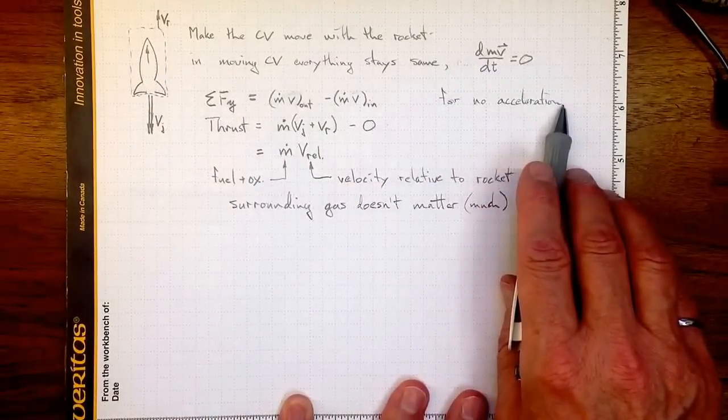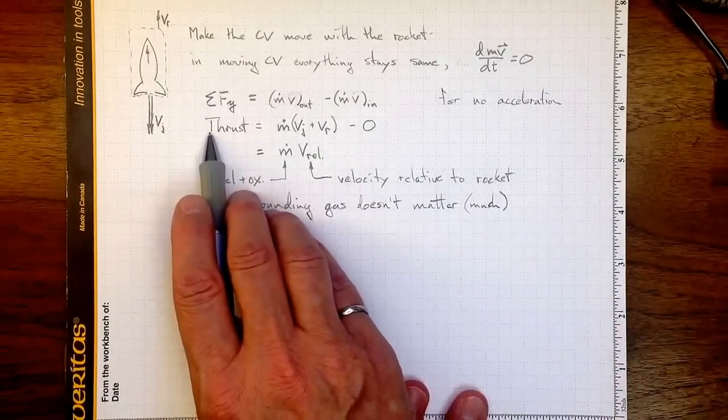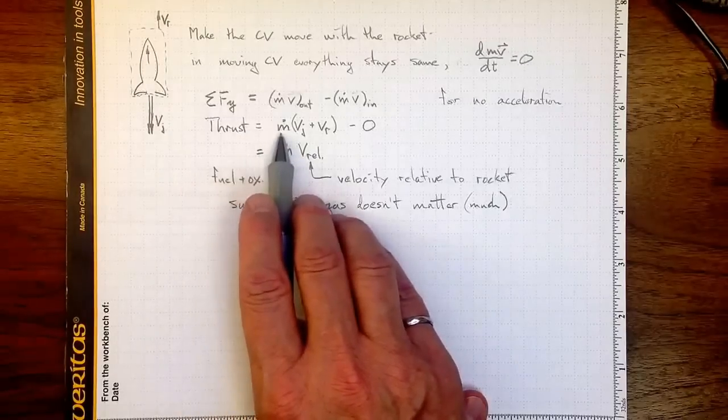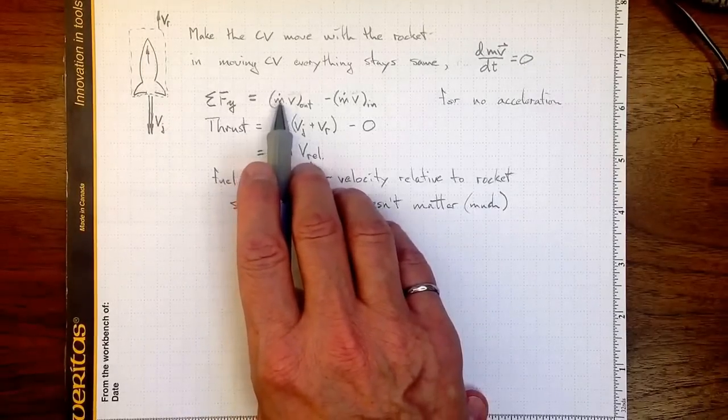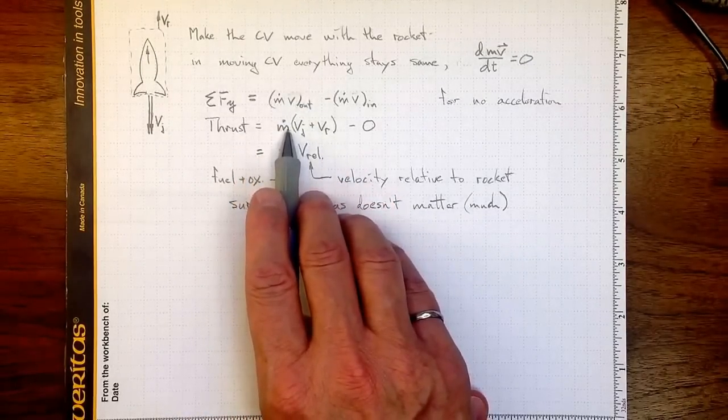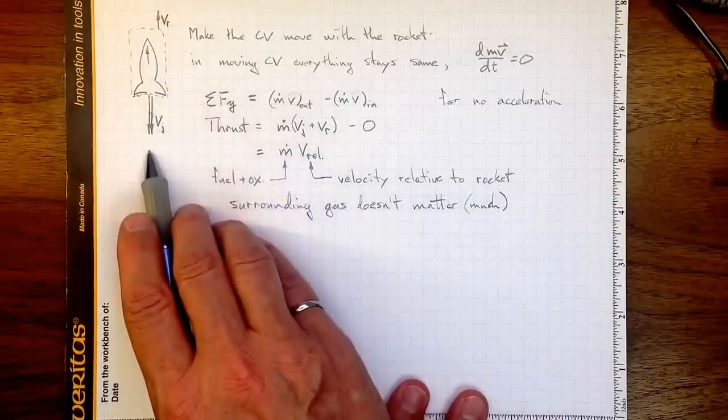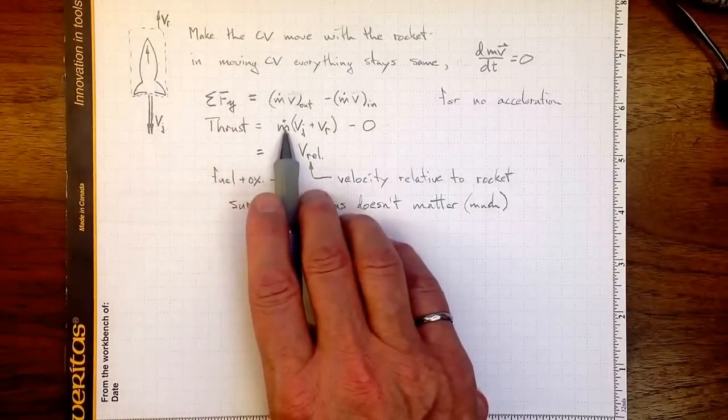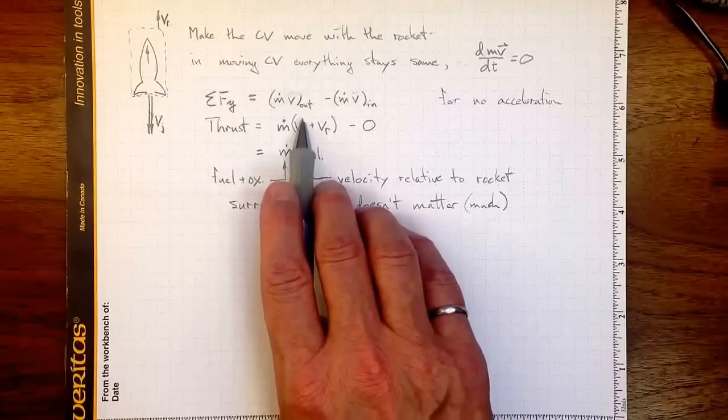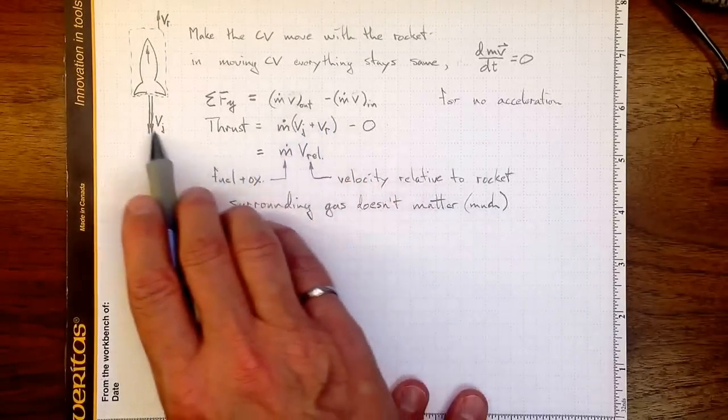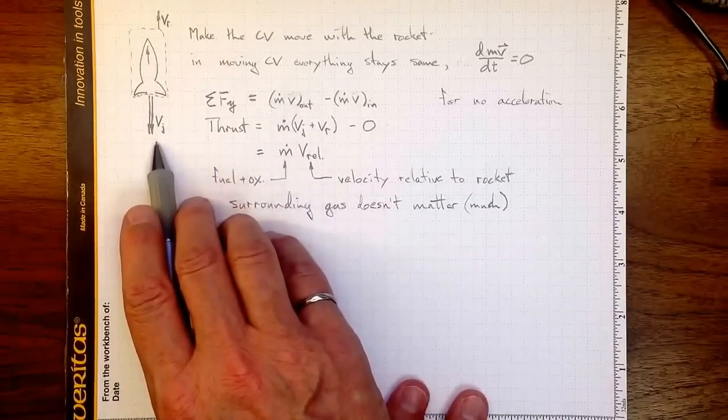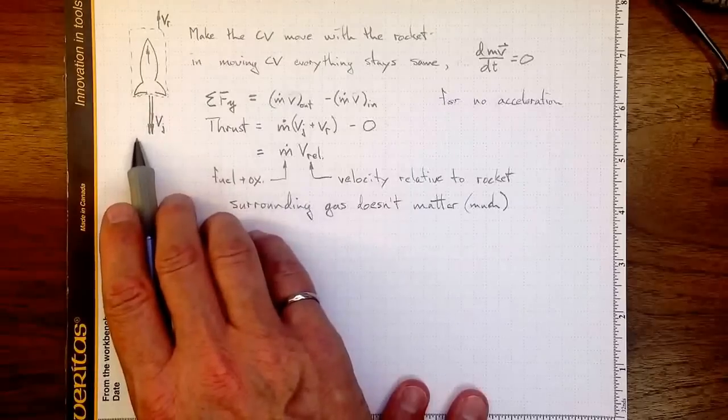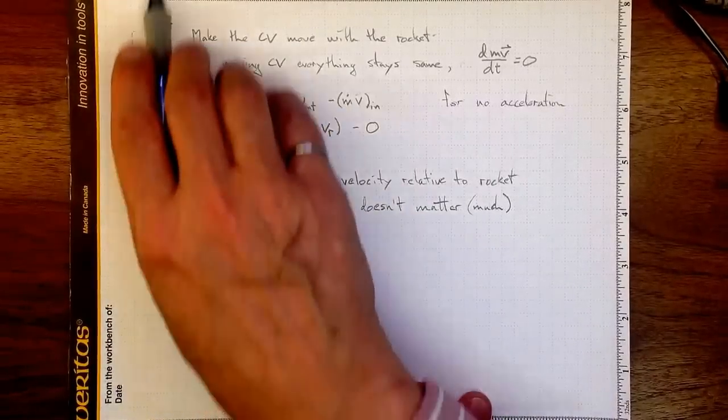So if we do the no acceleration case, then the thrust will be equal to ṁ v_out. ṁ, that's the mass of stuff that's coming out through the control volume, the stuff that's leaving the rocket. And v_out is the velocity of the jet in absolute coordinates plus the velocity of the rocket.